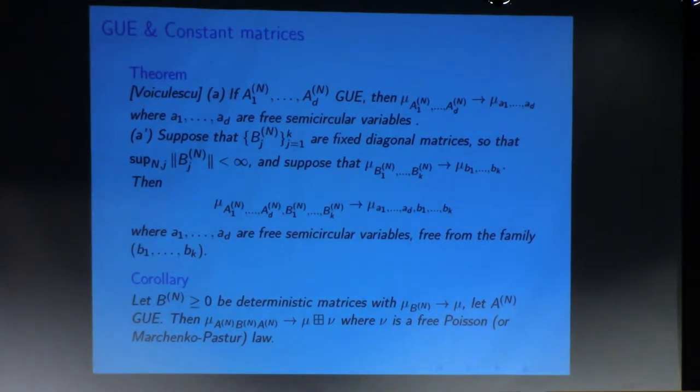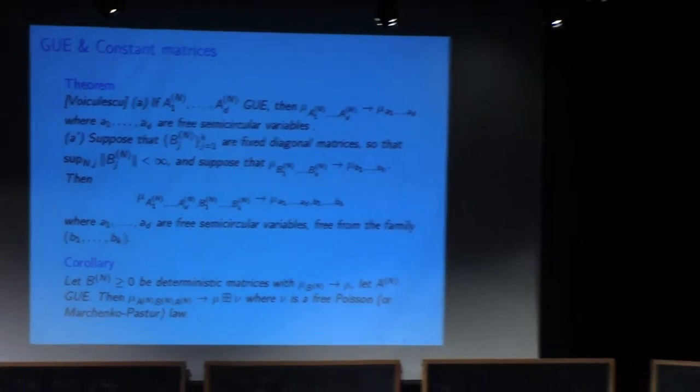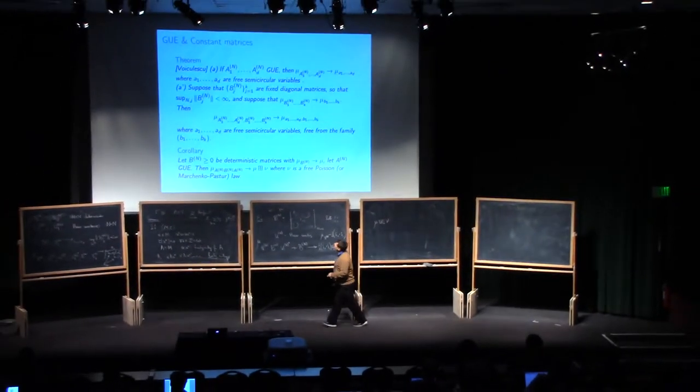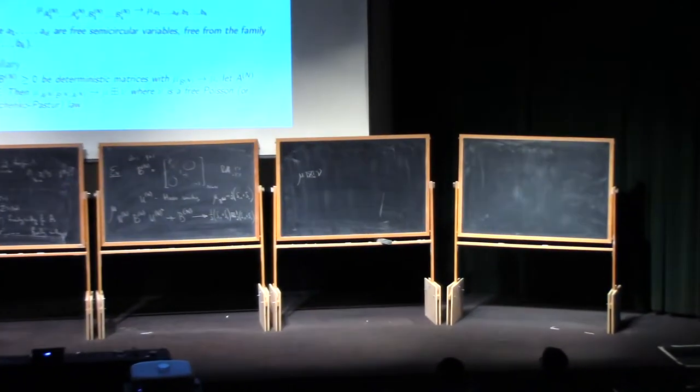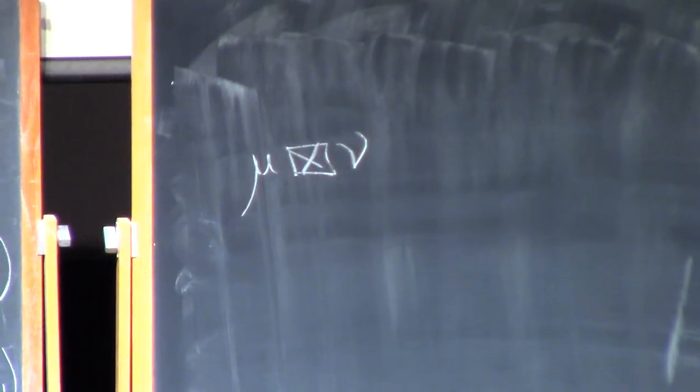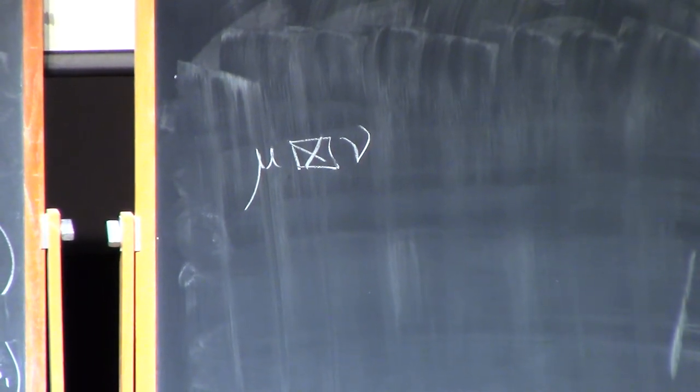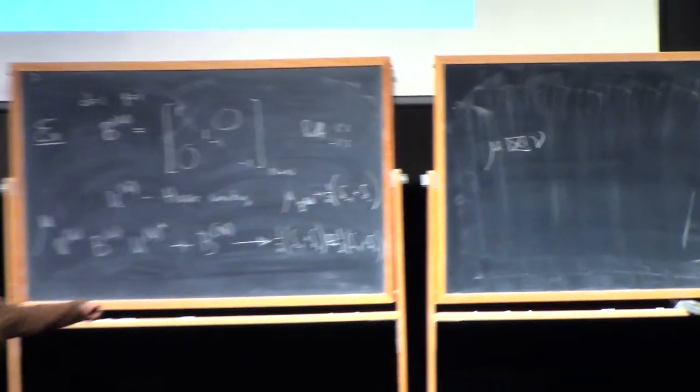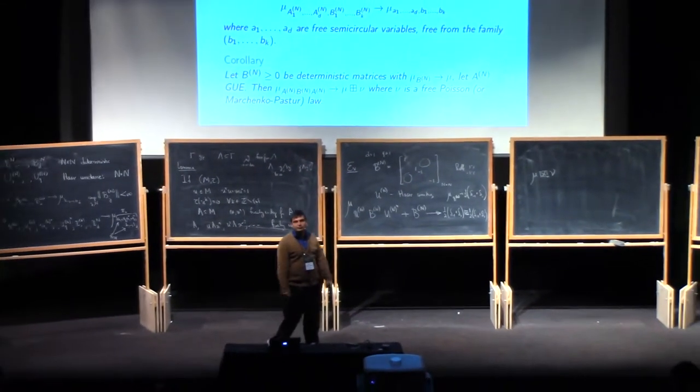And one computation you can get from this, this is very typical in population statistics. If you take these B_Ns, again, take a single matrix B_N, and then multiply it on both sides by a random GUE matrix, you can compute what that converges to. It will converge to the, oops, that's a typo. This should be the multiplicative free convolution, of course. A multiplicative free convolution where mu is the law that is the limit of your Bs, whatever that ends up being, and nu is a free Poisson law, or a Marchenko-Pastur law.